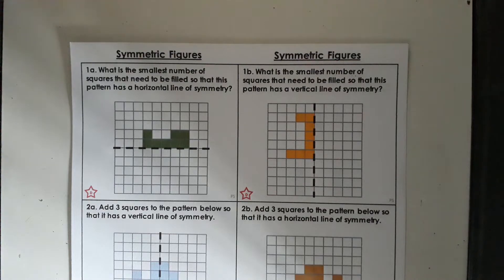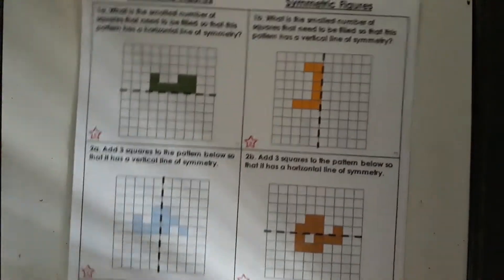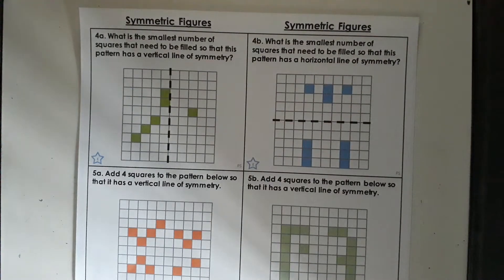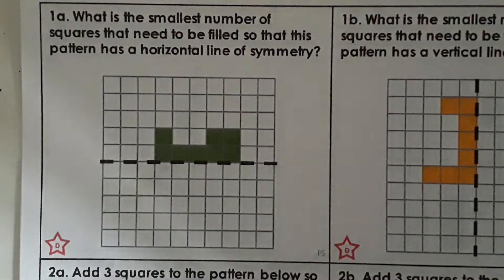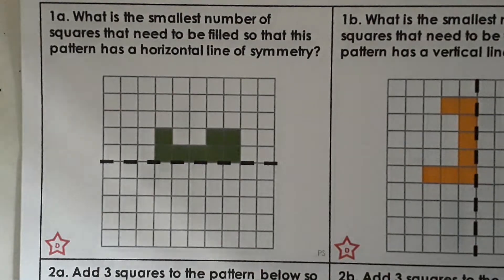They are the classroom secrets ones so I suggest what you do is everybody completes the developing and the expected and then those of you who want to go on further can complete the greater depth. Okay so we know the questions are the same across all three levels of sheet. They just get progressively a little more complex but the essence of the question is the same.